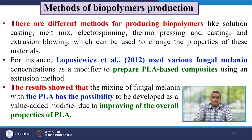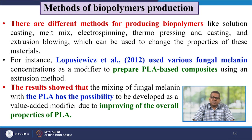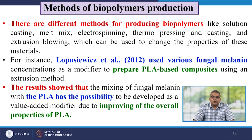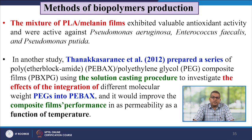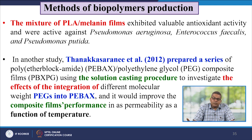There are several methods for biopolymer production: solution casting, melt mix, electrospinning, thermopressing and casting, and extrusion blowing — all of which can be used to change material properties. In 2012, scientists used various fungal melanin concentrations as a modifier to prepare PLA-based composites using the extrusion method, showing that mixing fungal melanin with PLA has possibilities as a value-added modifier improving overall PLA properties. The mixture of PLA and melanin film exhibits valuable antioxidant activity and was active against Pseudomonas and different types of bacteria.